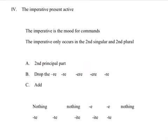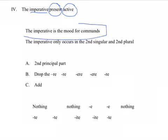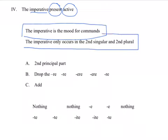So far, you've had some experience with the imperative present active — that's the mood for commands, this is the tense, and this is the voice. The imperative only occurs in the second person singular and the second person plural — you singular and you plural. I'll often write y'all or yous, some local variant of a dialect, but the proper English is just 'you.' You have to know whether it's plural or singular.